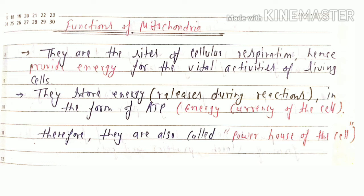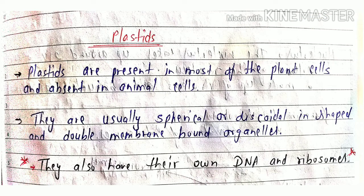Mitochondria are known as the powerhouse of the cell because they are the site of cellular respiration, and hence provide energy for the vital activities of living cells. They store energy released during reactions in the form of ATP, which is also known as the energy currency of the cell. Therefore, mitochondria are also known as the powerhouse of the cell.